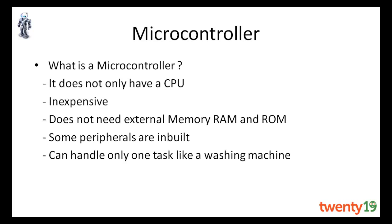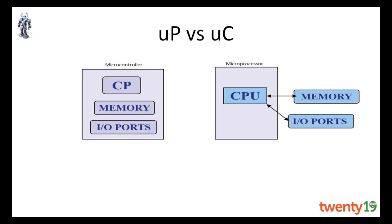Compared to a microprocessor, a microcontroller is very inexpensive — it may start from a few hundred rupees and go up to thousands of rupees. A microcontroller can handle only one task at a time, but it controls your whole device. In a microcontroller, the CPU, memory, and I/O ports are all on-chip, whereas in a microprocessor only the CPU is on-chip and memory and I/O ports are off-chip and must be connected externally.